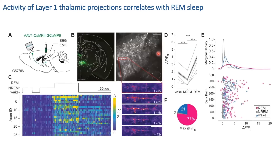Moving back to in vivo recording using two-photon calcium imaging, we expressed the calcium indicator in the central medial thalamus and recorded the projecting axons in the prefrontal cortex. These axons are mainly in the very superficial layers of the prefrontal cortex. We recorded those axons during sleep, particularly during REM sleep, and found that selectively during REM sleep, those axons significantly increase their activity similarly to parvalbumin interneurons — 77% of all detected axons show their maximal activity during REM sleep.